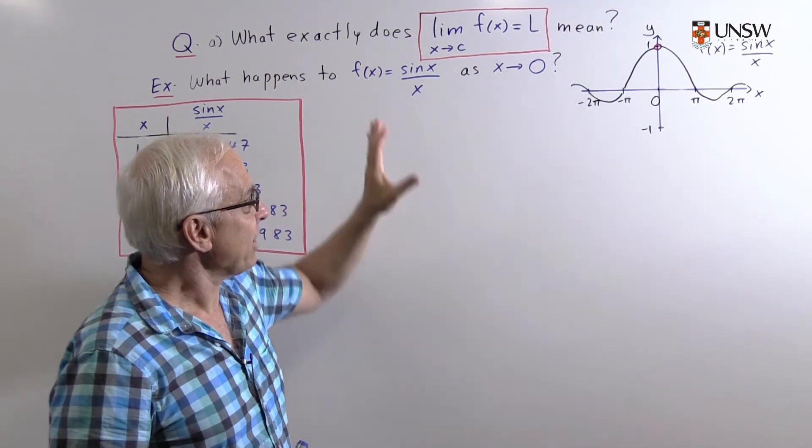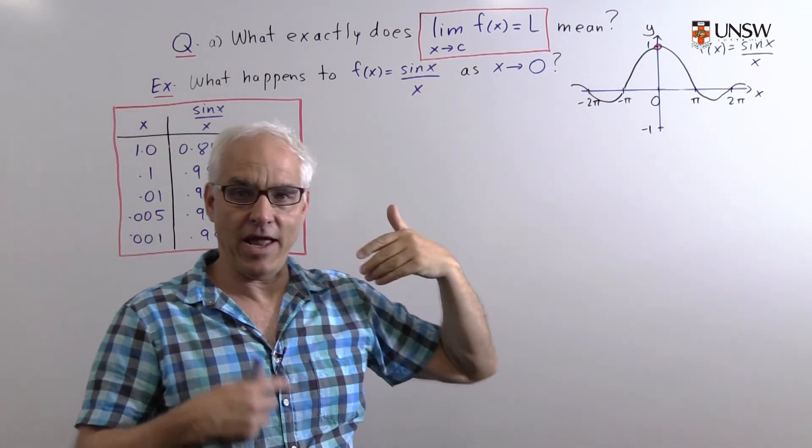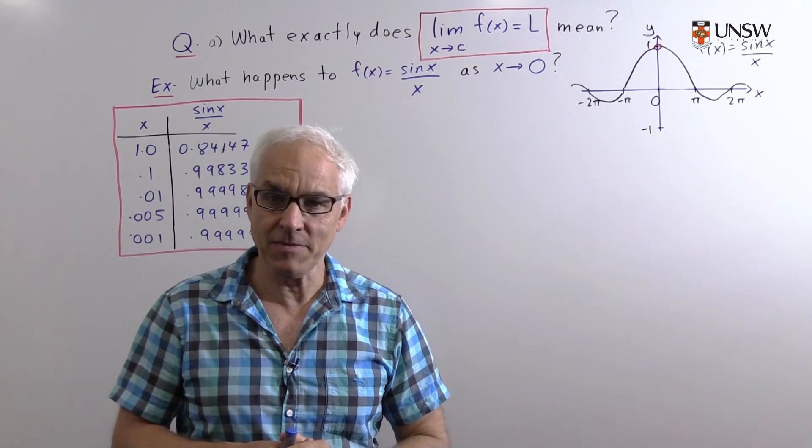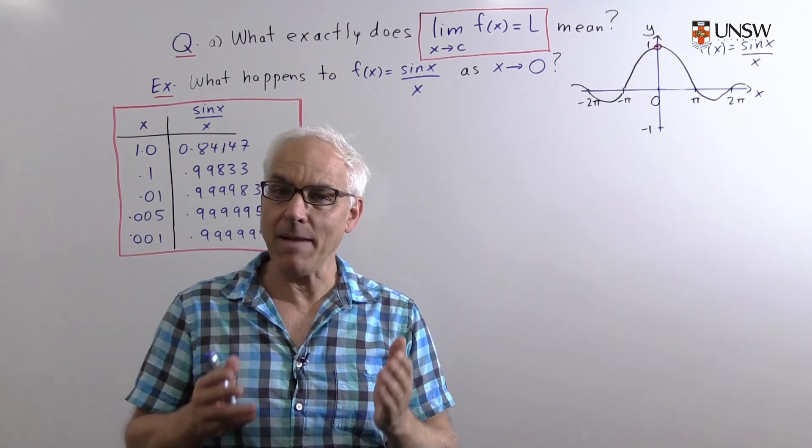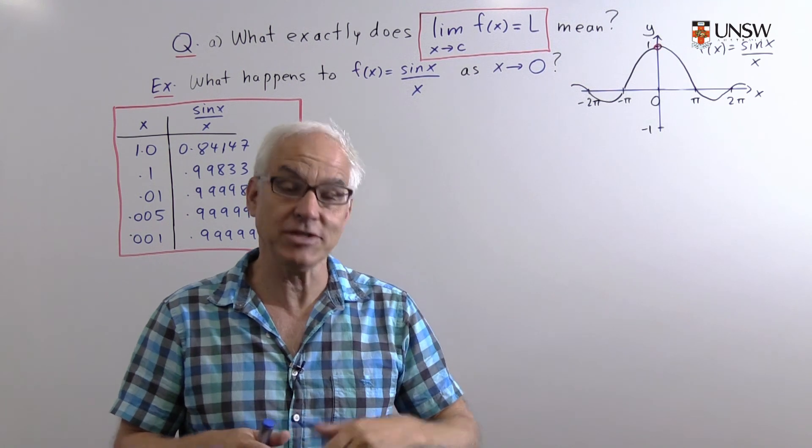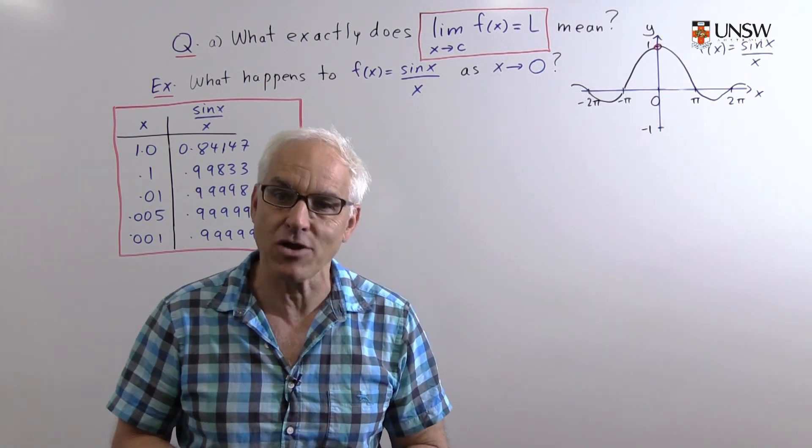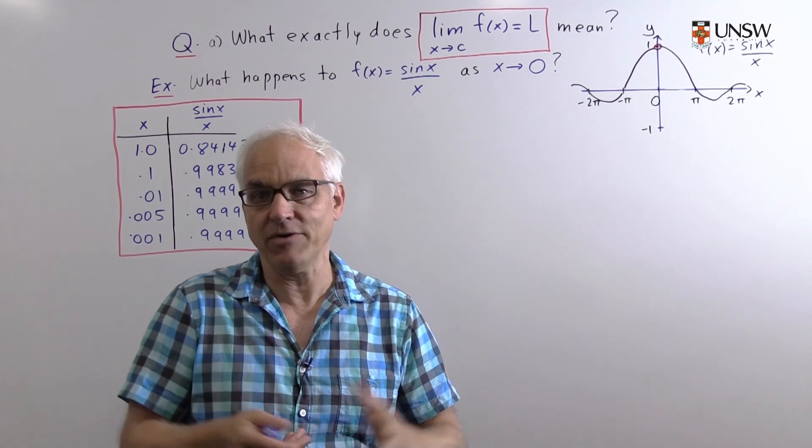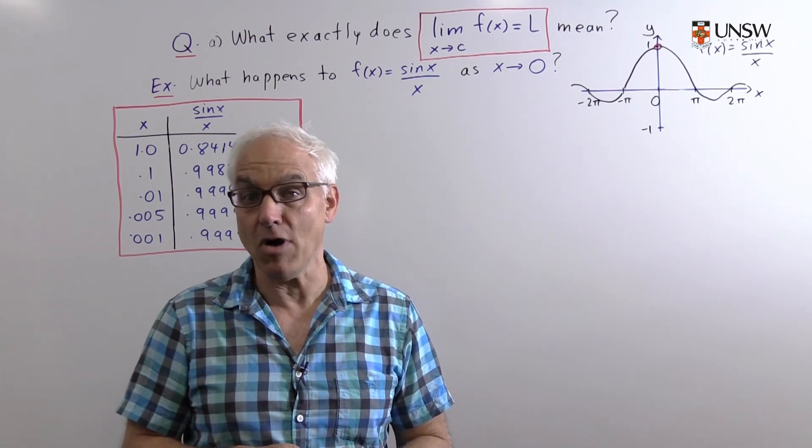We're going to address this by looking first at a concrete example, namely sine x over x. Then we're going to look at the epsilon-delta official definition that was introduced in the 19th century by Cauchy and then Weierstrass, which forms a theoretical foundation for modern calculus.